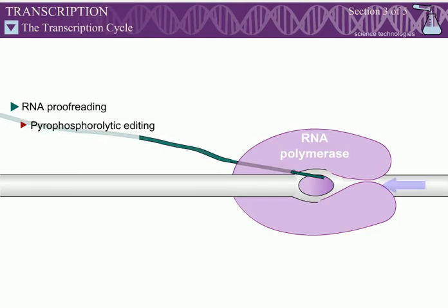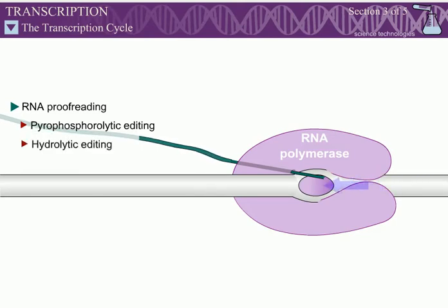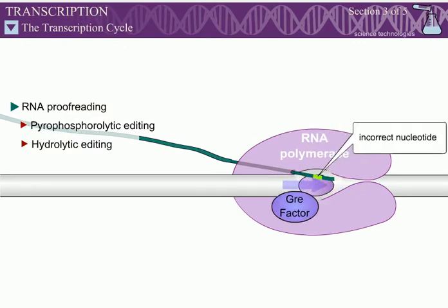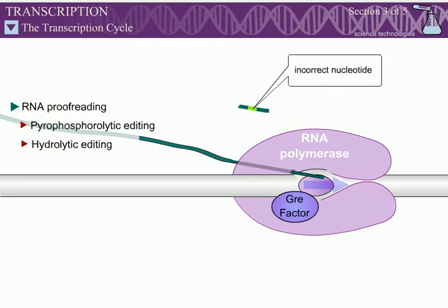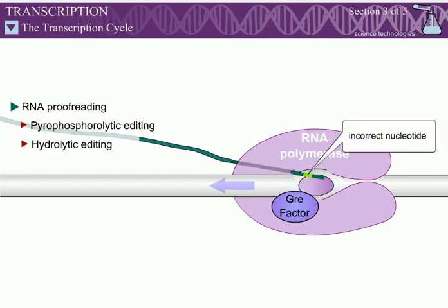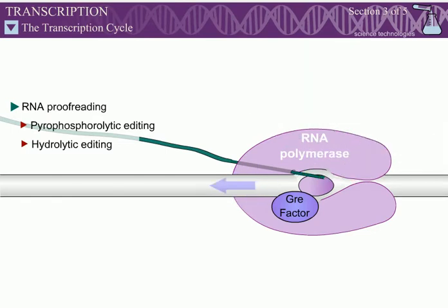The second mechanism is called hydrolytic editing and involves backtracking of the polymerase by one or more nucleotides to cleave the RNA product. In bacteria, hydrolytic editing is stimulated by GRE factors, which also serve as elongation stimulating factors.